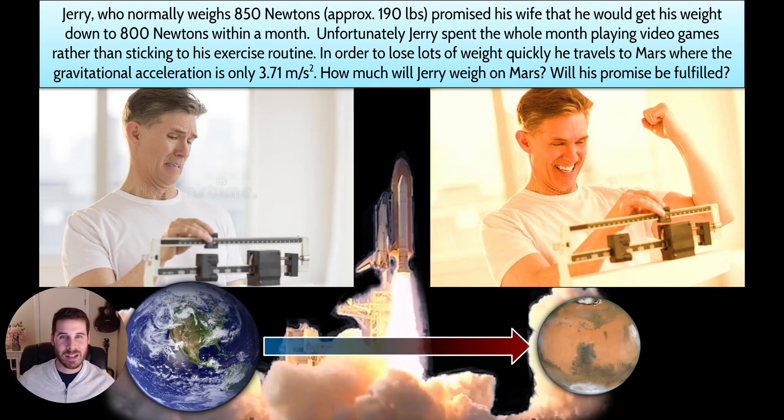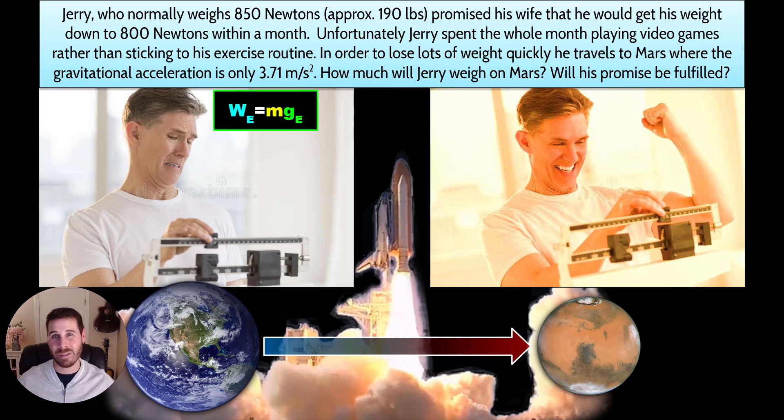So let's see if Jerry's going to fare well in his next conversation with his wife. What do we need to know? Well, they're asking us how much Jerry is going to weigh on Mars, so we're probably going to need that equation for weight, which is weight equals mass times gravity. We know how much gravity there is on Mars, but do we know his mass to go into that calculation? Well, we know his weight, but no, we don't know his mass. So that's the first thing we're going to have to figure out, is the mass of Jerry.